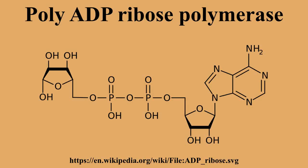Tankyrases have multiple roles in the cell, including vesicular trafficking through their interaction with GLUT4 vesicles via insulin-responsive aminopeptidase (IRAP). They also play a role in spindle assembly through interaction with the nuclear mitotic apparatus, allowing bipolarity. In the absence of tankyrases, mitotic arrest is observed in pre-anaphase through the MAD2 spindle assembly checkpoint.